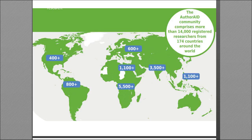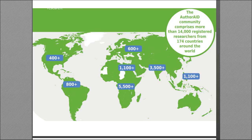This infographic shows our AuthorAid network, which includes anybody registered on the website. We currently have more than 14,000 registered researchers from around 174 countries. Our biggest network is in Africa, followed closely by Central and Southeast Asia, with growing networks in Latin America and Northern Asia.